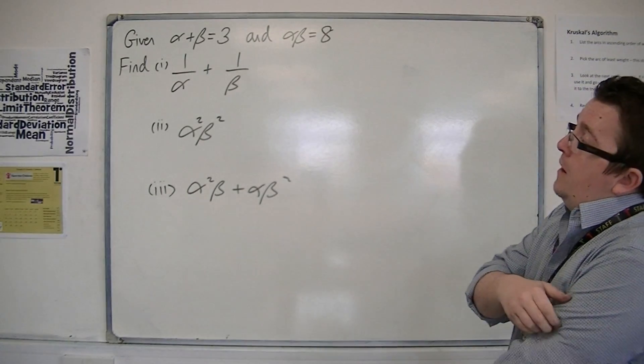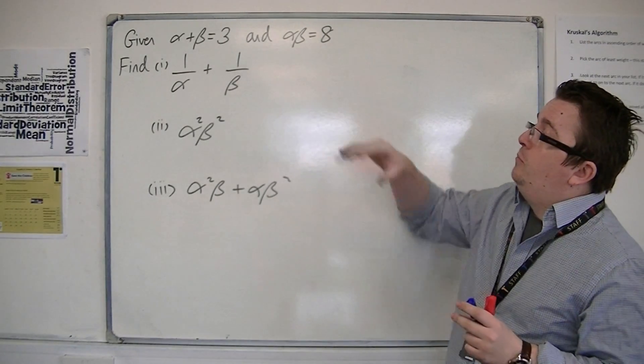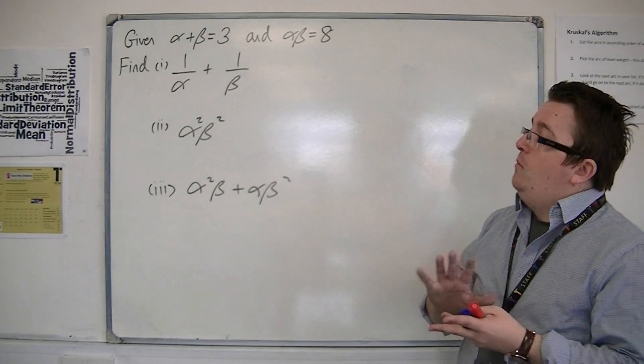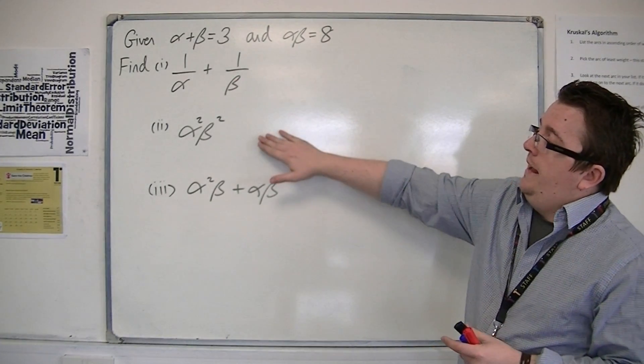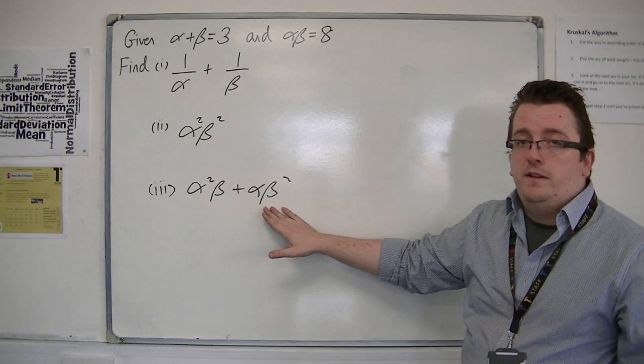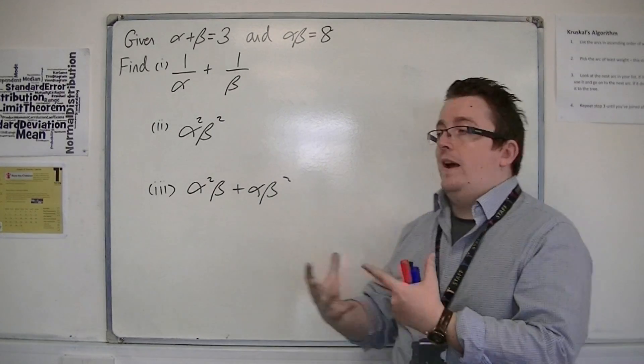For example, you might be given that in one particular case, alpha plus beta is 3 and alpha beta is 8. And we want to find 1 over alpha plus 1 over beta, alpha squared beta squared, and alpha squared beta plus alpha beta squared - we want to find what the values of these would be.